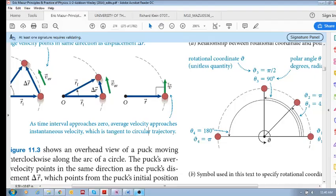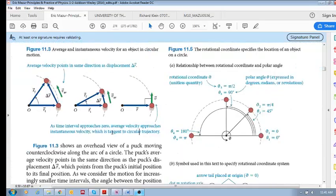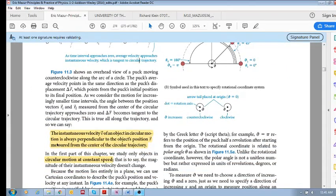Velocity is perpendicular to our position vector. So as the time interval approaches zero, the average velocity approaches instantaneous velocity, which is two things: it is perpendicular to the direction of this position vector, and it is tangent to the circular trajectory.